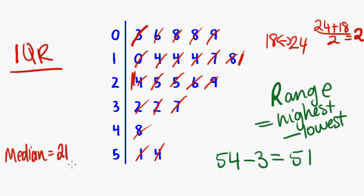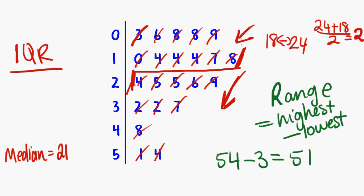I don't really need to know the exact median number to figure out Q1 and Q3 — what I need to know is where the line is that splits the data. So now I've got everything below being one new data set and everything above being another. There should be even numbers in each: counting up, there are 11 pieces of data above the median line and 11 pieces of data below.